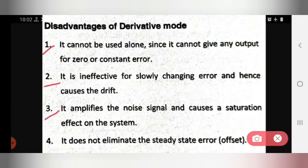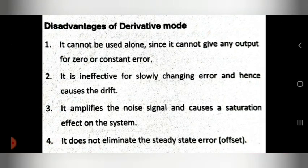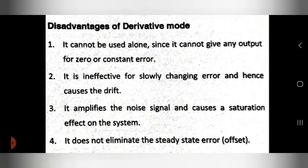Second, when the error changes slowly, it becomes ineffective and causes drift in the response. Third, it amplifies noise signals and causes a saturation effect on the system. Fourth, it does not eliminate the steady state error — in single derivative mode, the steady state error cannot be eliminated.